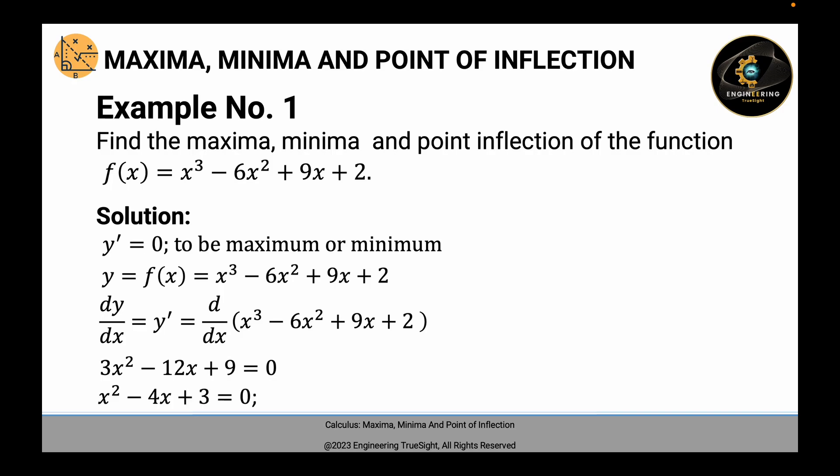Simplifying, we get the equation x squared minus 4x plus 3 equals 0. This is a quadratic equation. We will use factorization — the equation is factorable, giving factors x minus 3 and x minus 1. So the values of x are x equals 3 and x equals 1.